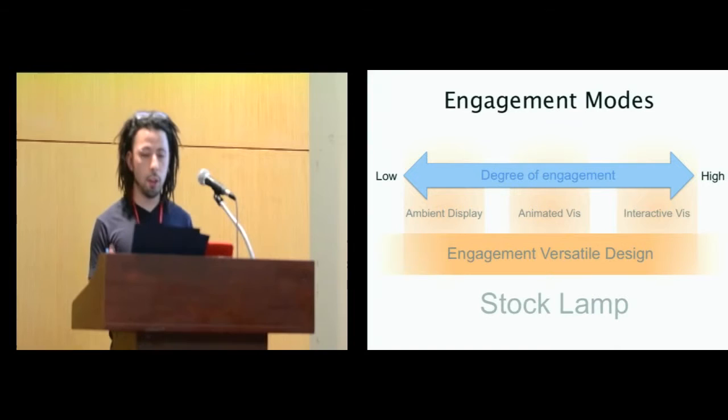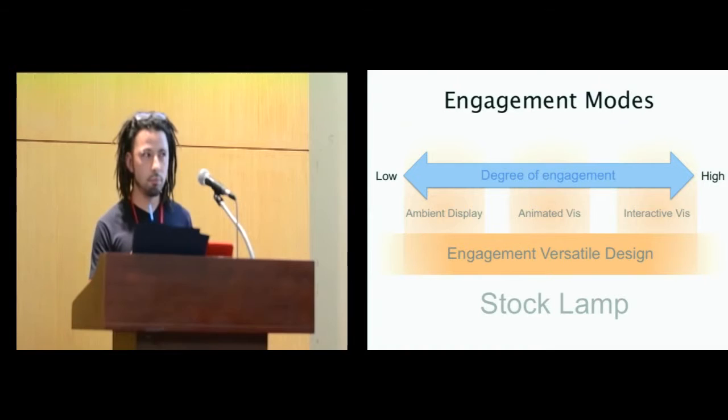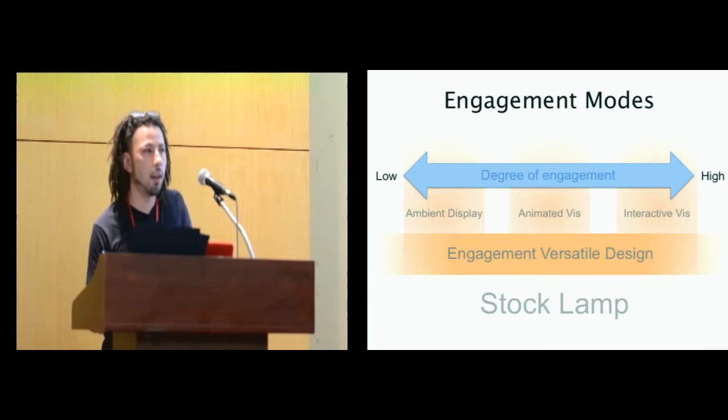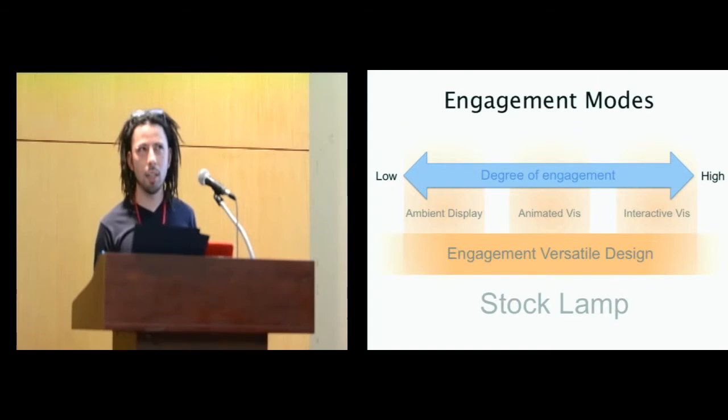And then incorporate the different design principles exercised for these different types of systems to design a truly useful visualization. So basically in this example, we try to incorporate three different types of visualization system or categories into a single comprehensive visualization. And our example system is called Stocklamp, which uses stock data. It fits really well because people are not really interested in stock data 24-7, but they really want to know everything that's going to happen. There's a lot of home part-time investors, so we try to target that user.